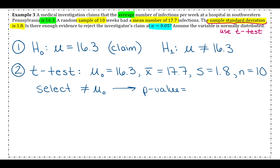and then n is 10, and then make sure you select the not equal to mu naught, since that is the sign in the alternative hypothesis. Go to calculate, and then for p-values, we round to four decimal places. So hopefully you also got 0.0362.